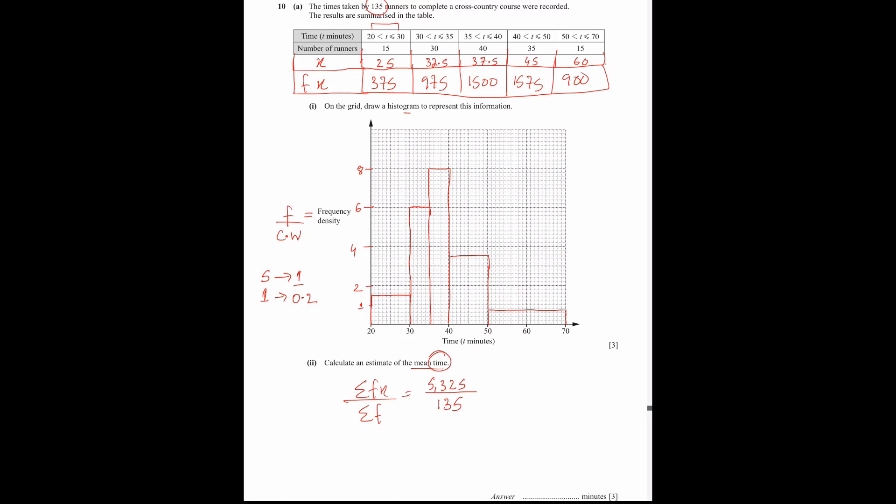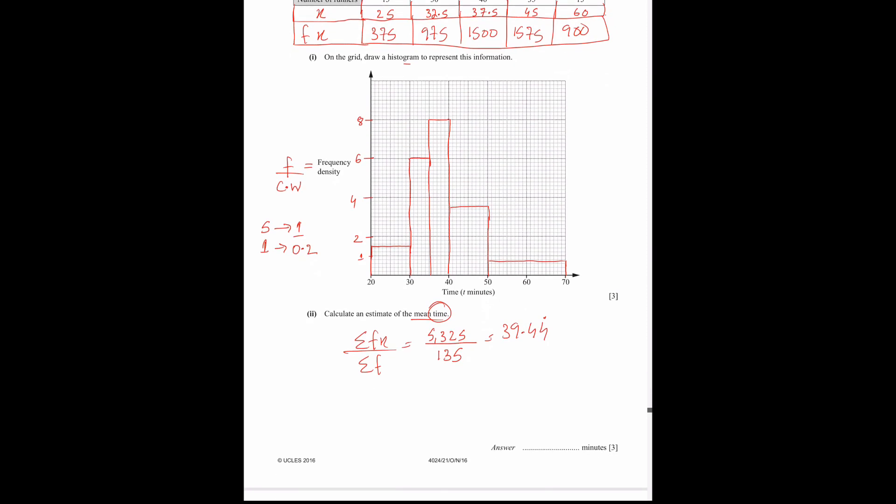So once you divide it by 135, your answer will be 39.44. It will be a recurring decimal, so because we have a standard rule we give non-exact answers correct to three significant figures, so 39.4 is our answer.